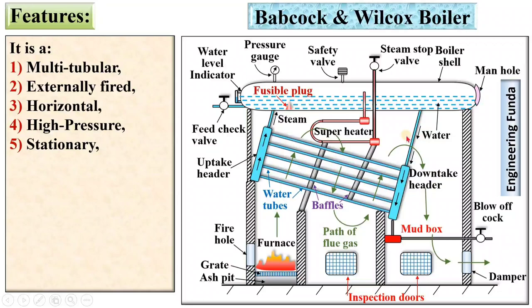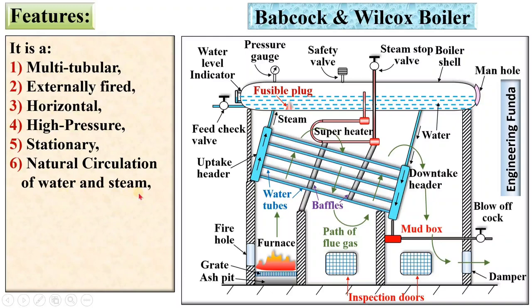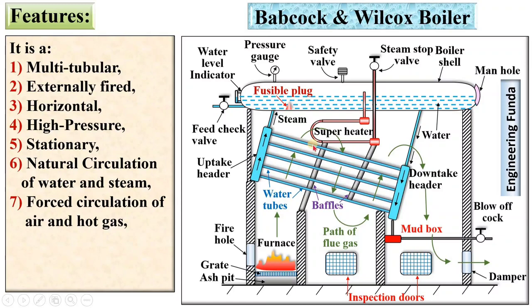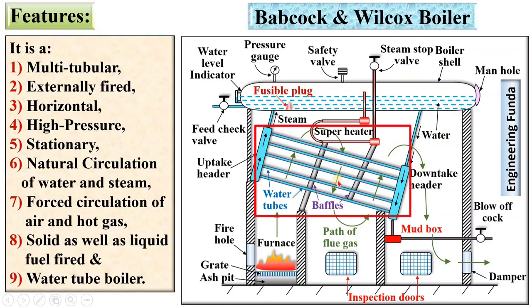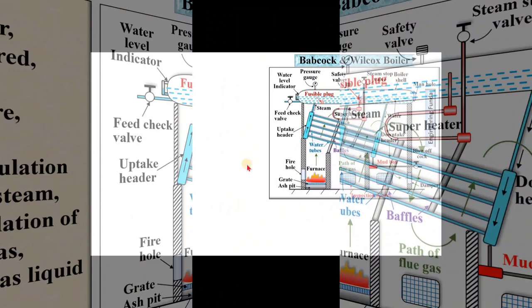It is a stationary boiler, so you cannot move it from one place to another in working condition. Next, there is natural circulation of water and steam — the circulation of water is due to density difference only. Then it has forced circulation of air and hot gases, where the flue gases are driven with the help of external sources. It is solid as well as liquid fuel fired — you can use solid fuel or liquid fuel. Finally, it is a water tube boiler because water is inside the tube.